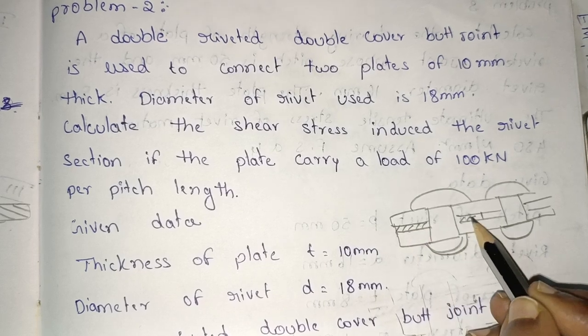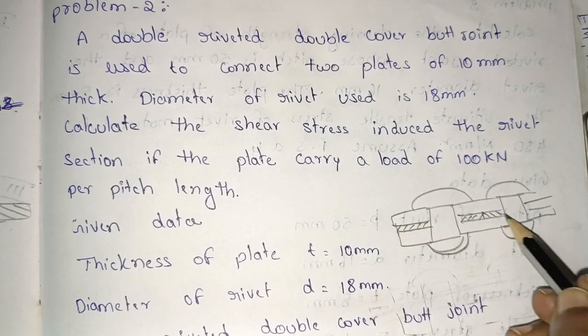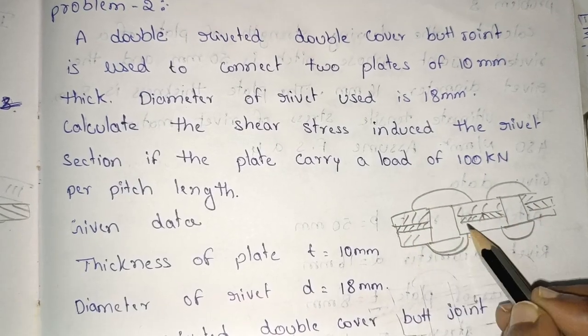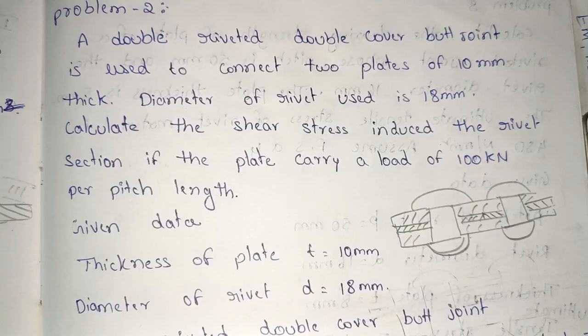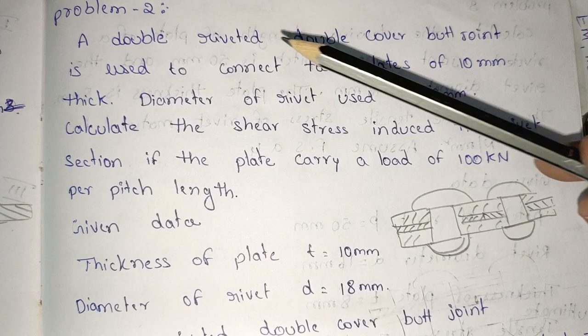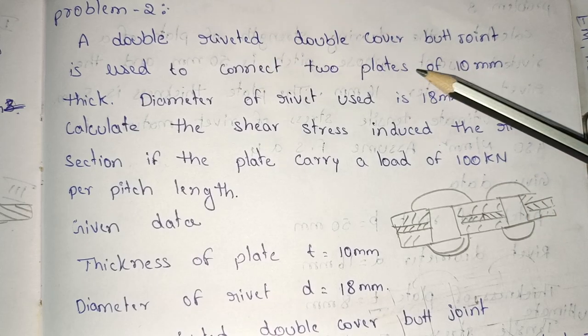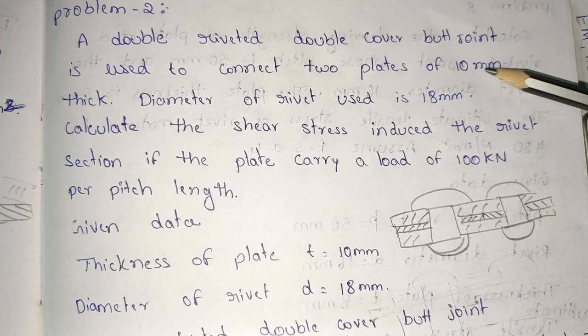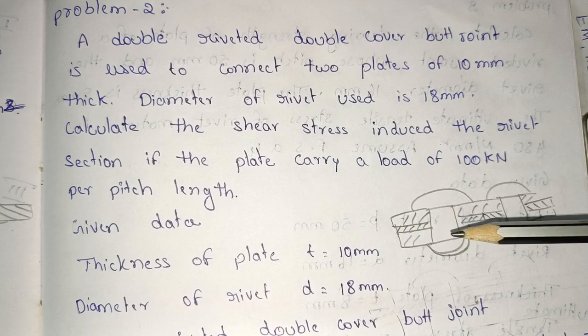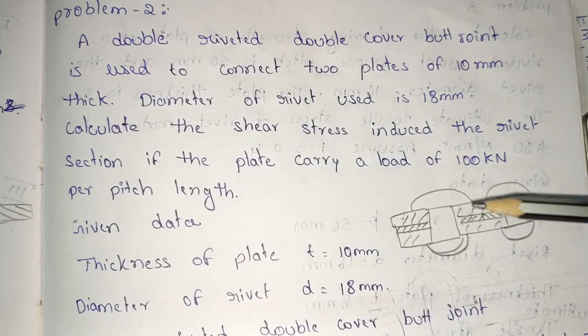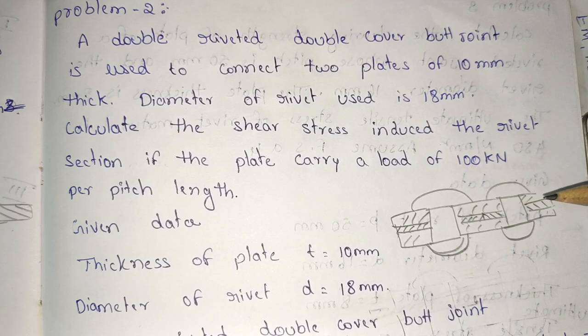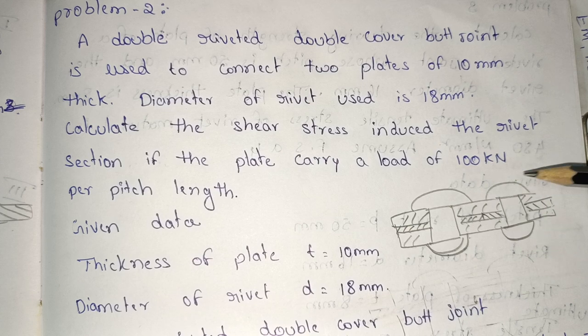Here are two plates. This is the butt joint with two plates. Double riveted double cover butt joint. The two plates have thickness of 10 mm and the rivet diameter is 18 mm. The load is 100 kN.